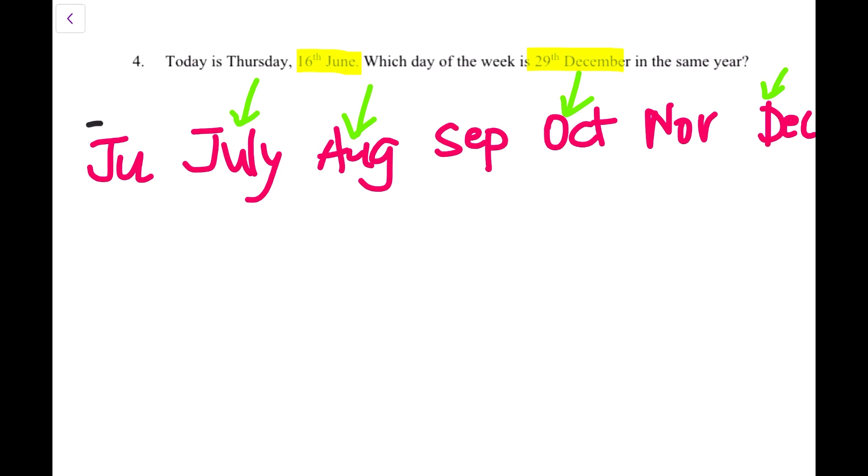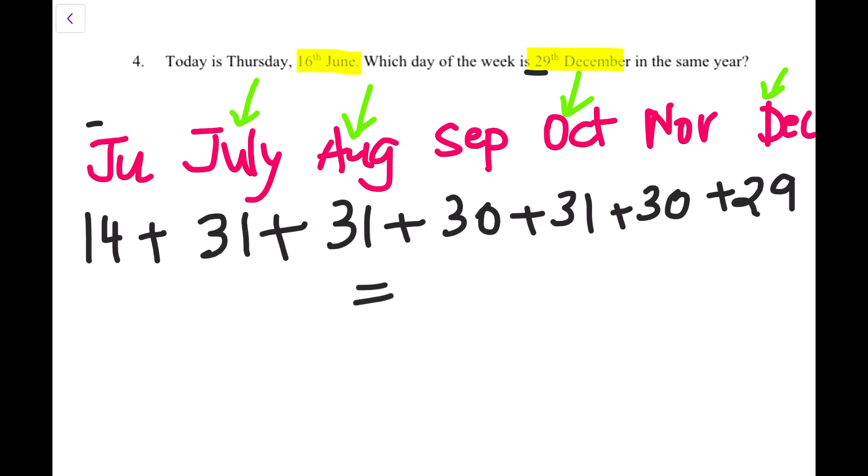So let's now work out how many days are passed in between the two days. Because it's already 16th of June running, so that means this month has 30 days. That means only 14 days are remaining in the month of June. July, whole July is remaining, that's 31. 31 days in August, 30 days in September, 31 days in October, 30 days in November. And December, we only have to think about till 29th December. So only 29 days. Now, when you add these days up, all these numbers up, you can do a column method, it turns out to be 196 days.